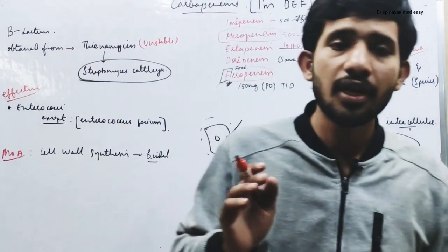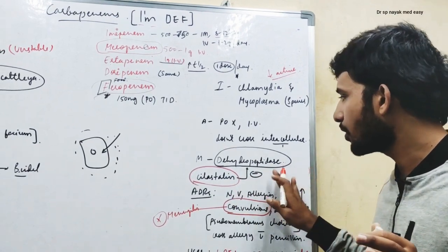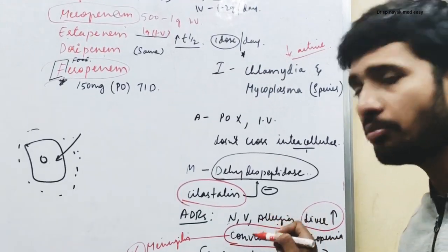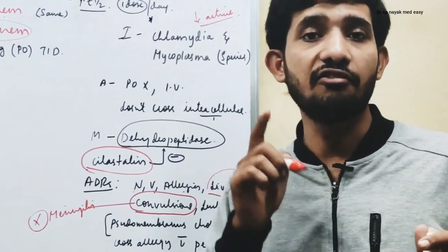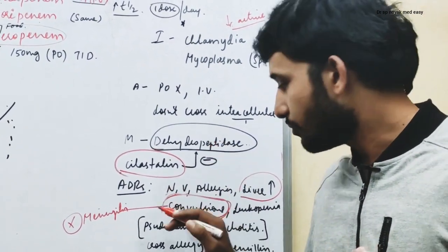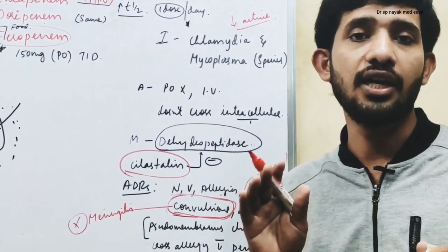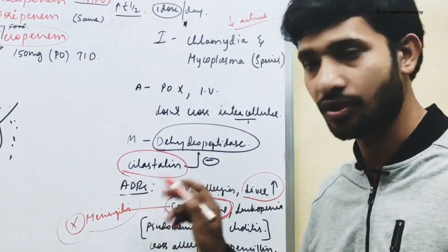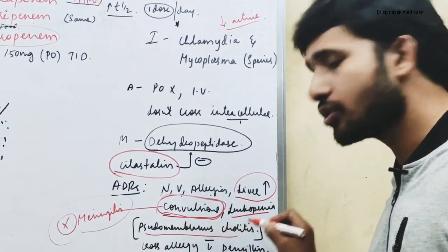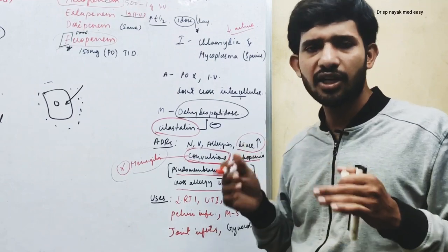Imipenem has some ADRs — and not only imipenem, all carbapenems will have ADRs. Imipenem causes nausea, vomiting, allergies, liver enzyme elevation, and importantly it causes convulsions. Because of the risk of convulsions, imipenem and carbapenems are strictly contraindicated in meningitis. It also causes leukopenia, pseudomembranous colitis, and cross-reactivity with penicillin.